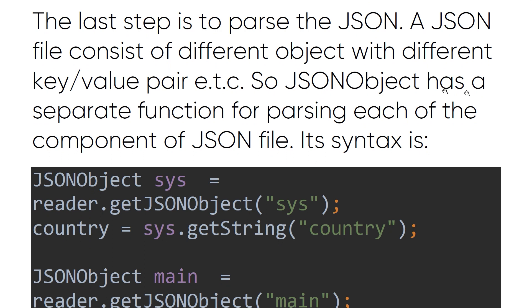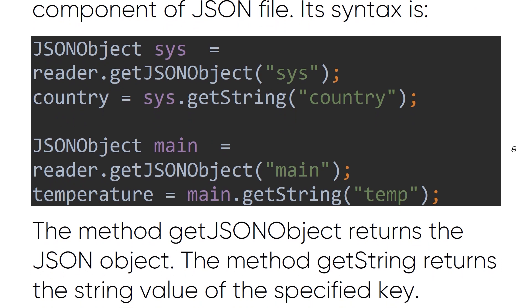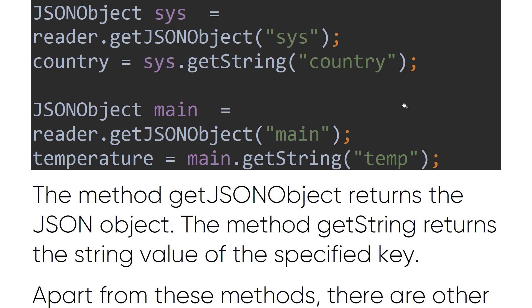A JSON file consists of different objects with different key-value pairs, as I told you in the previous video. JSONObject has a separate function for parsing each of the components of a JSON file. The syntax is: JSONObject and the name of the object equals reader dot getJSONObject with the key of the JSON object, and country equals sys dot getString. In this way we are getting the country name from the JSON object called sys.